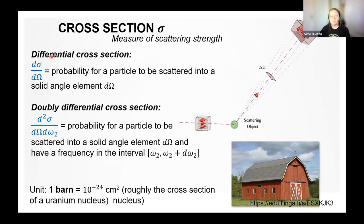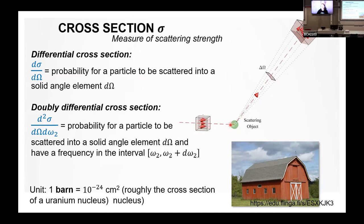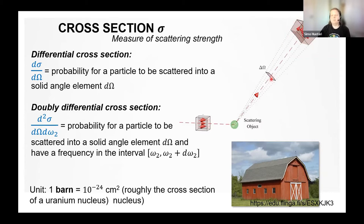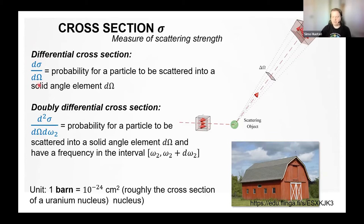There are two modifications to the total cross section. The differential cross section measures the probability for a particle to be scattered into a certain solid angle element. You have an incoming wave field that interacts with the scattering object, and you count how many particles get scattered into that solid angle element in a certain direction. When doing spectroscopy, one adds another differential part: the double differential cross section, which also includes the energy range — the probability for a particle to be scattered into a solid angle element having a frequency in a given interval between omega2 and omega2 plus d-omega2.